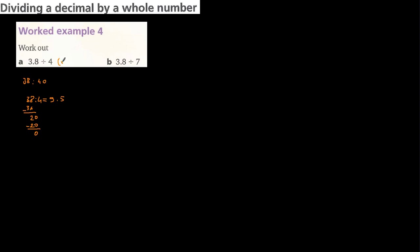At the beginning I multiplied by 10 to get rid of the decimal point, so now I need to divide the result by 10 as well. Dividing by 10 means moving the decimal point one unit to the left. So the decimal point moves one place left, and the answer becomes 0.95.